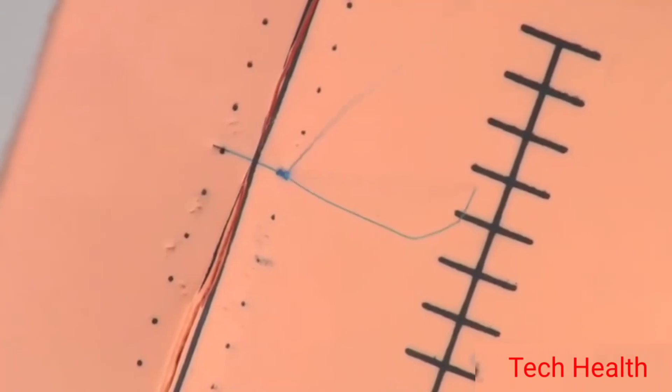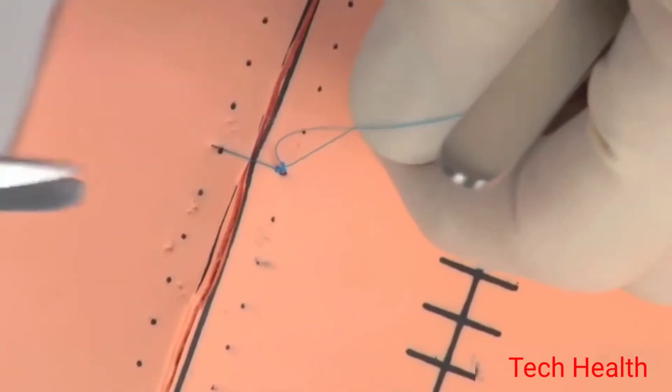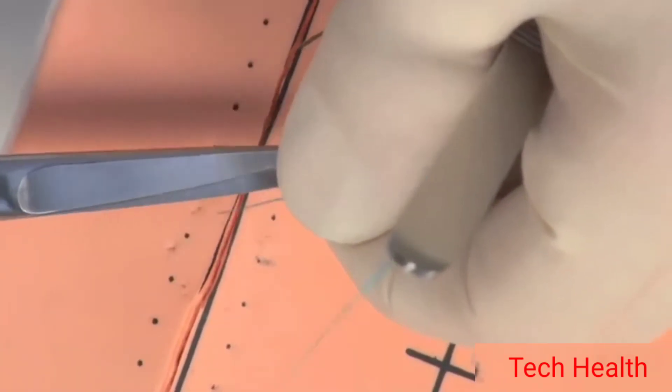When you are done, bring the knot outside the wound and cut it with the scissors. Now, practice this ten times.